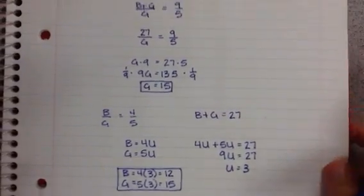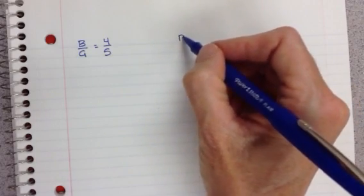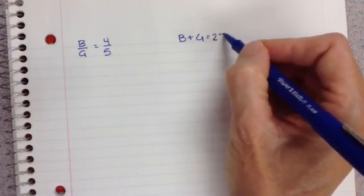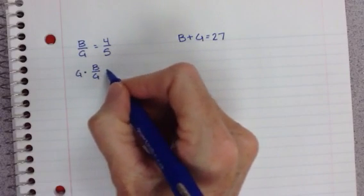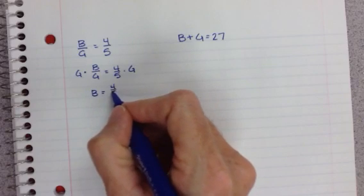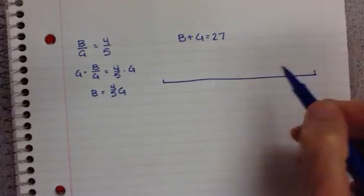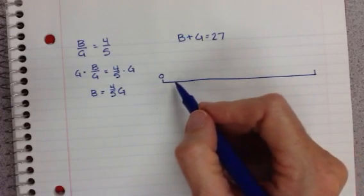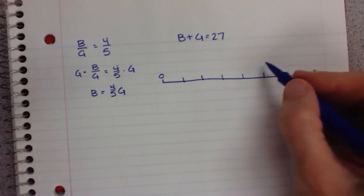Alright, let's take a look at one last solution. And this uses our trusty number line. So if we have B to G equals 4 fifths, and B plus G is equal to 27. Well, if we multiply both these sides by G again, then we have B is equal to 4 fifths G. If we draw a number line, then we could say that girls are equal to 5 parts. So here is G.